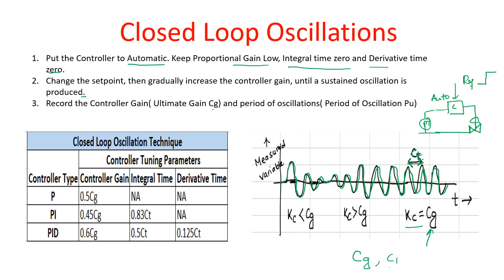Once you have CG and CD, you use a tuning table to get the proportional, integral, and derivative settings. For a P-only controller, the gain is 0.5 × CG. For a PI controller, the gain is 0.45 × CG and the integral time is 83% of CD. For a PID controller, the gain is 0.6 × CG, the integral time is 0.5 × CD, and the derivative time is 0.125 × CD.